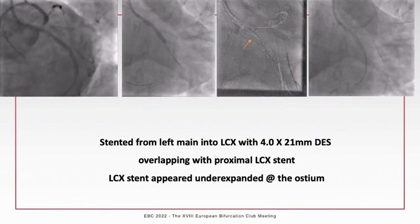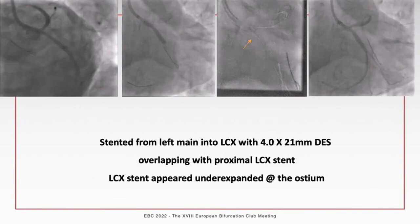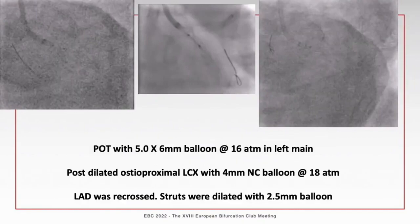For the distal left main, considerations included an obtuse-angled bifurcation with no significant mismatch between left main and daughter branches - left main diameter approximately 5mm, with IVUS showing proximal LAD and proximal circumflex at 4mm. The plan was a double-kissing crush. A 4 x 21mm drug-eluting stent was placed from left main into circumflex and deployed at 14 atmospheres - on balloon inflation there was a waist at the circumflex ostium, confirmed by stent boost as under-expansion.